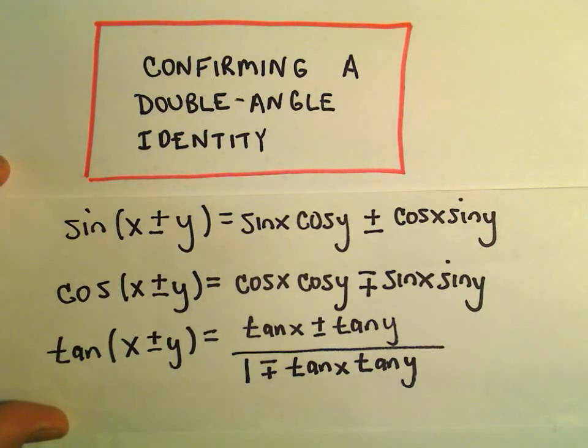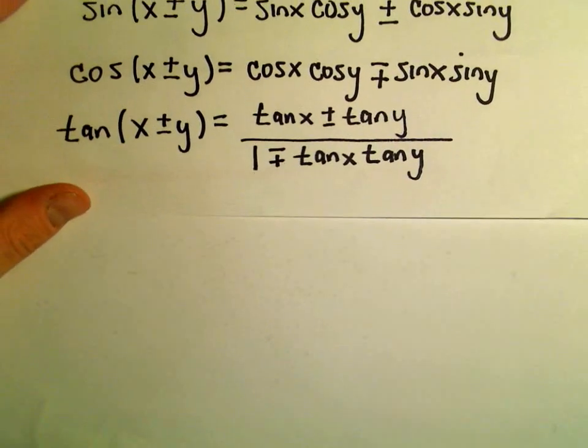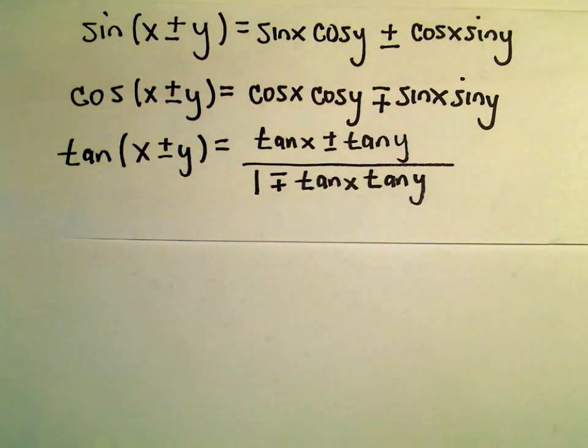Alright, in this video we're going to do an example related to a double angle identity. These really just come from our sum and difference identities.